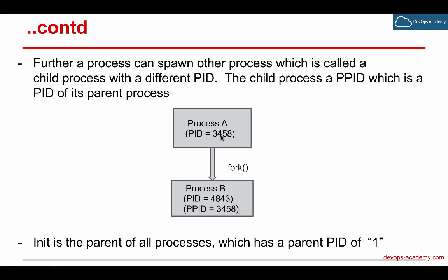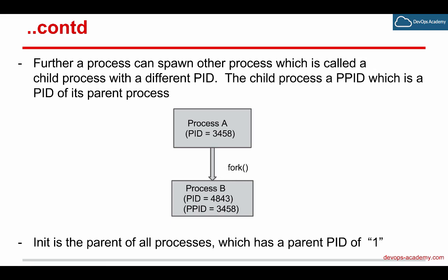Process A creates process B using the fork system call. Remember, system calls are the kernel calls — fork is the system call used to fork another process called a child process. Init is the parent of all processes, which has a parent PID of one. Init is the master and has a process ID of PID one. We will look into what init is in the next slide.